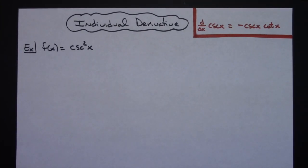In this video I'm going to work out an individual derivative. It is going to be a trig derivative and it is going to have a chain rule in it.